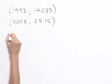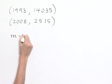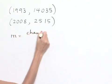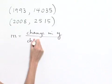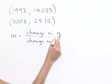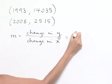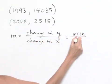In order to find the slope, we recall that our slope is equal to the change in Y divided by the change in X. That's also known as our rise divided by our run.